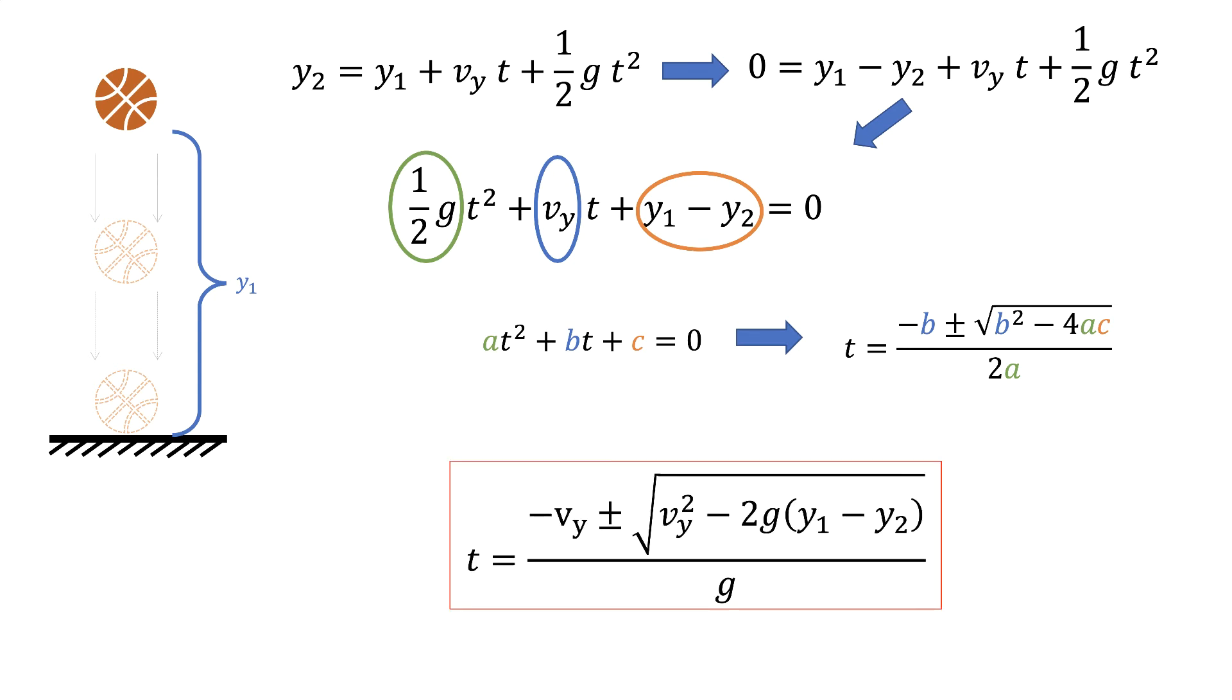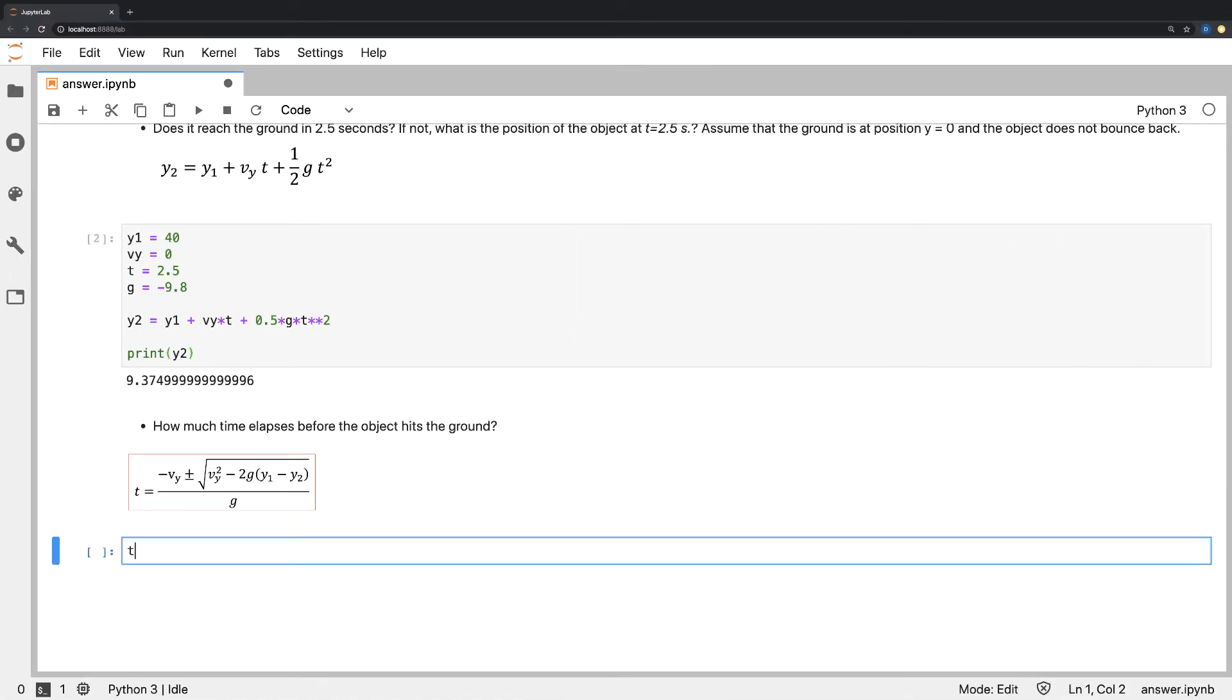And here is the final formula that we are going to use in Python. To simplify the Python code, we separate the square root part from the rest of the code. Remember, we had two roots—one with minus, one with plus—that's why we have t₁ and t₂.